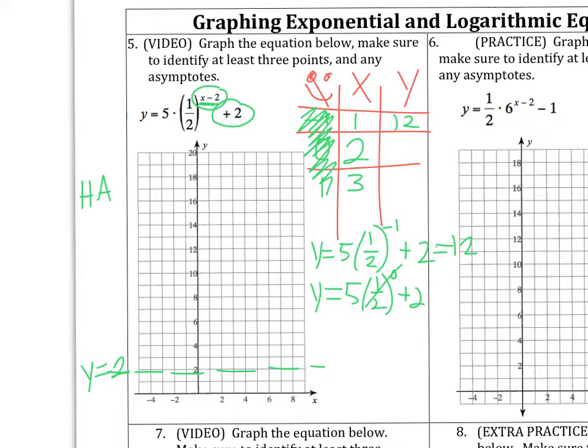We get 5 times 1 half. 2 minus 2 is 0. And then plus 2. So that's going to be 1. 5 times 1 is 5. Plus 2 is 7. And then finally, for my third point, we get y equals 5, 1 half, 3 minus 2 is 1, and then plus 2. 5 times 1 half is 2.5. Plus 2 is going to be 4.5. That's a pretty good point, actually. It's not often these come out really nice.